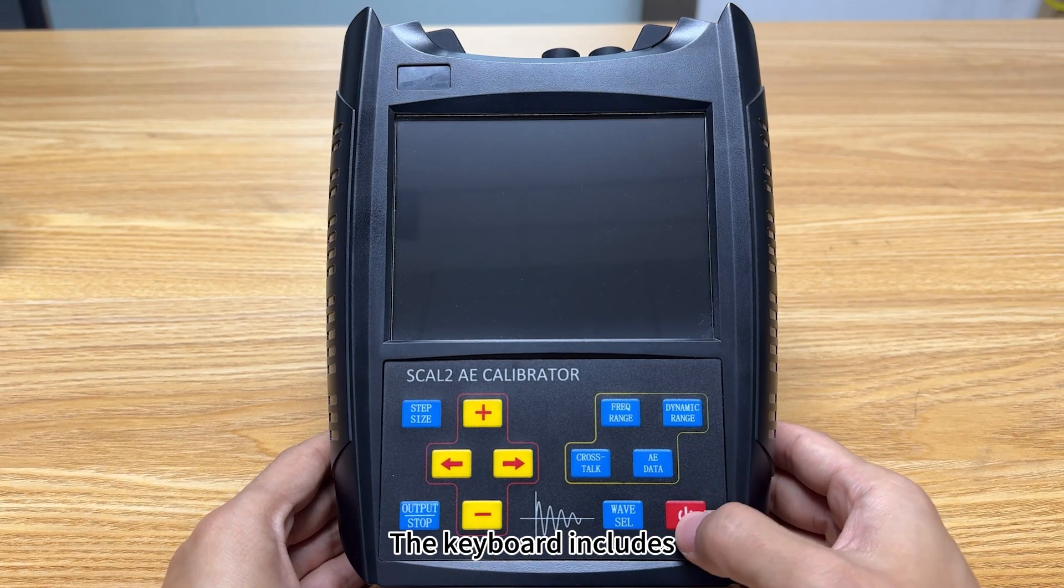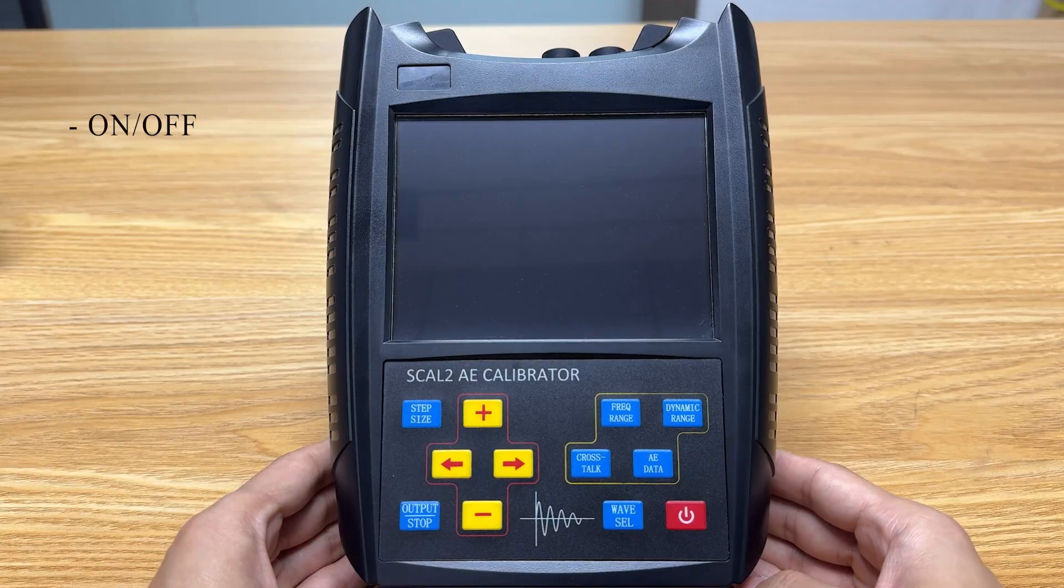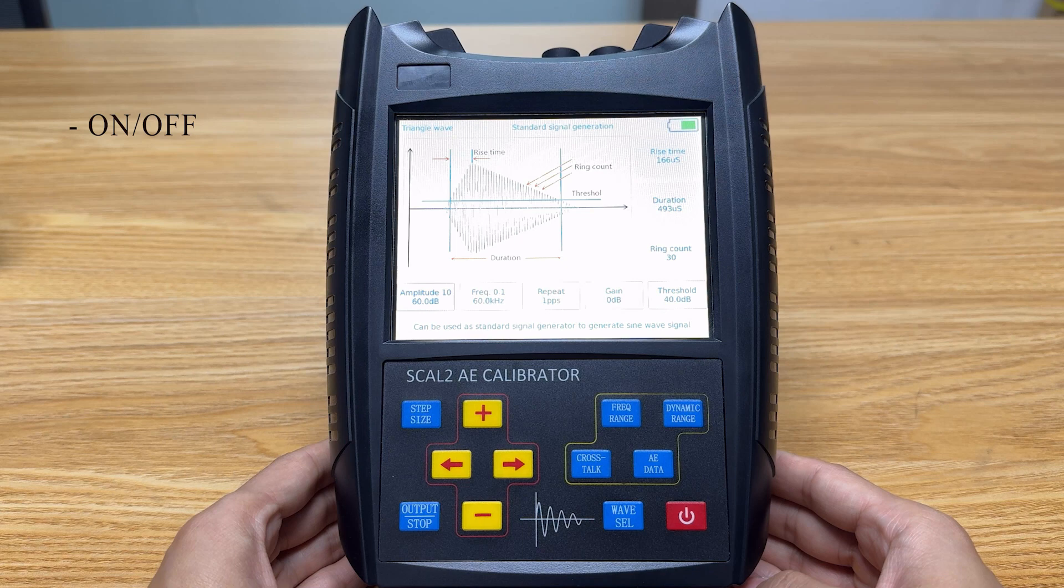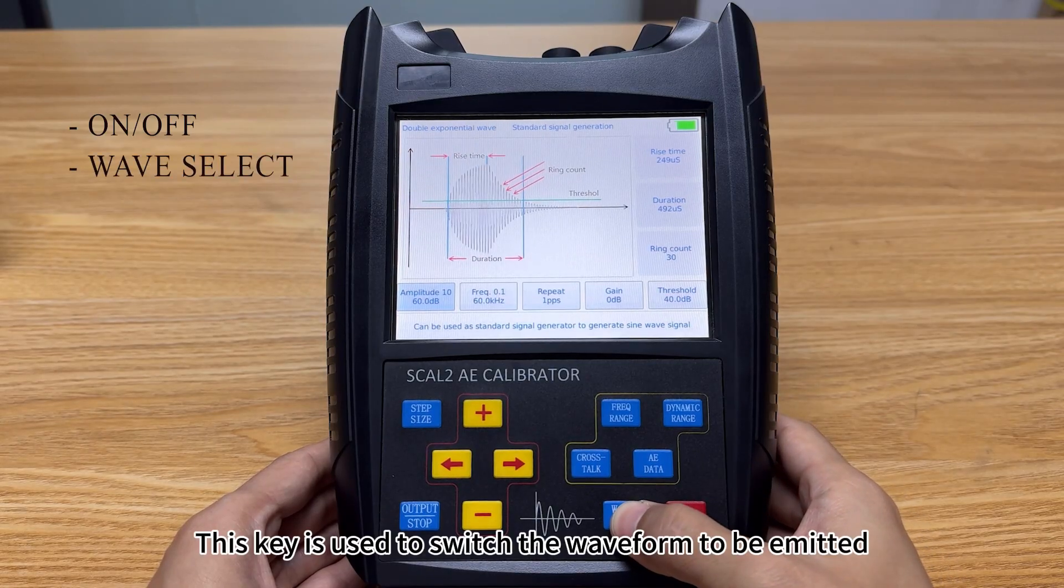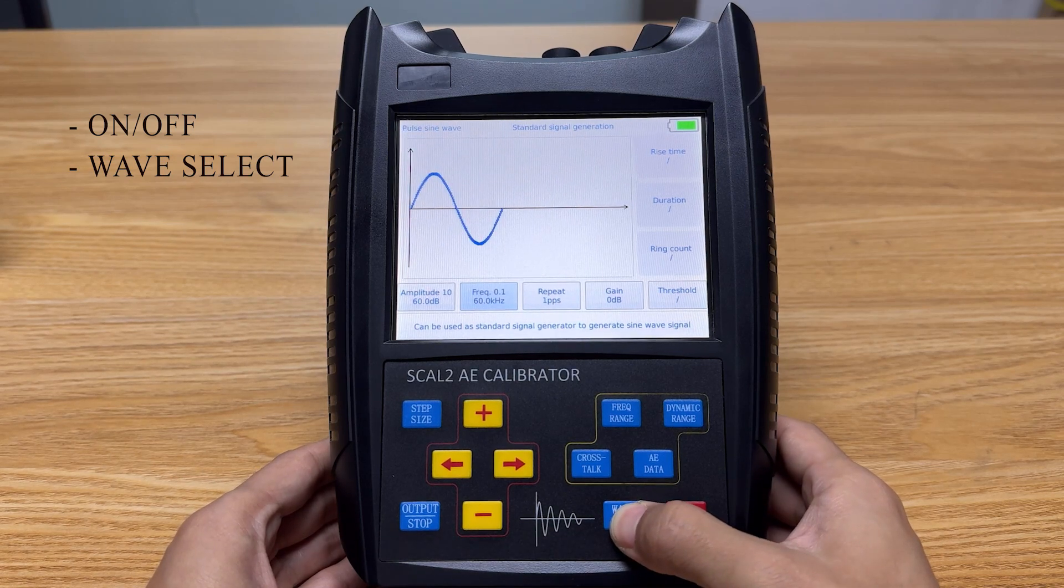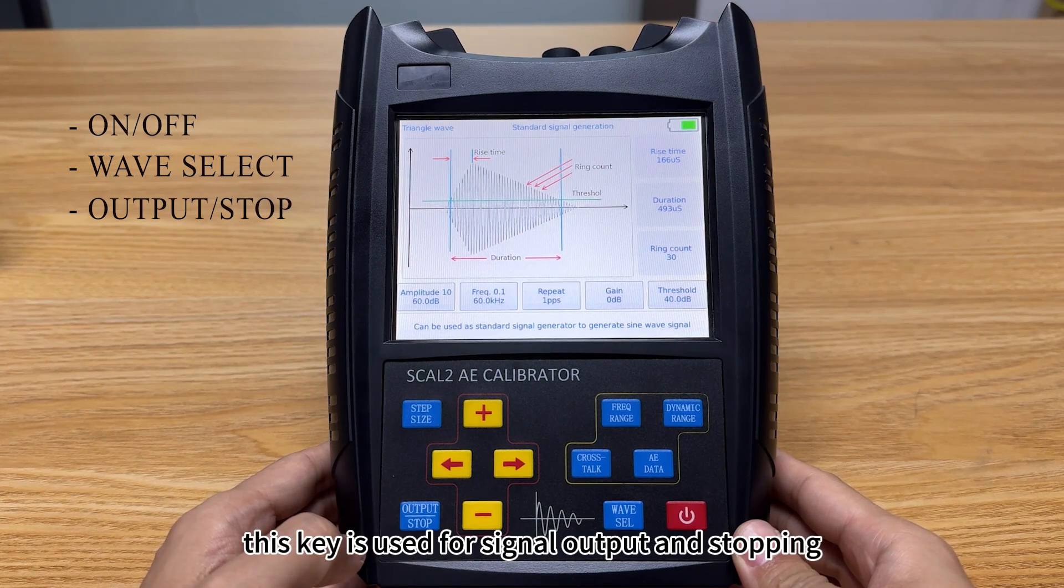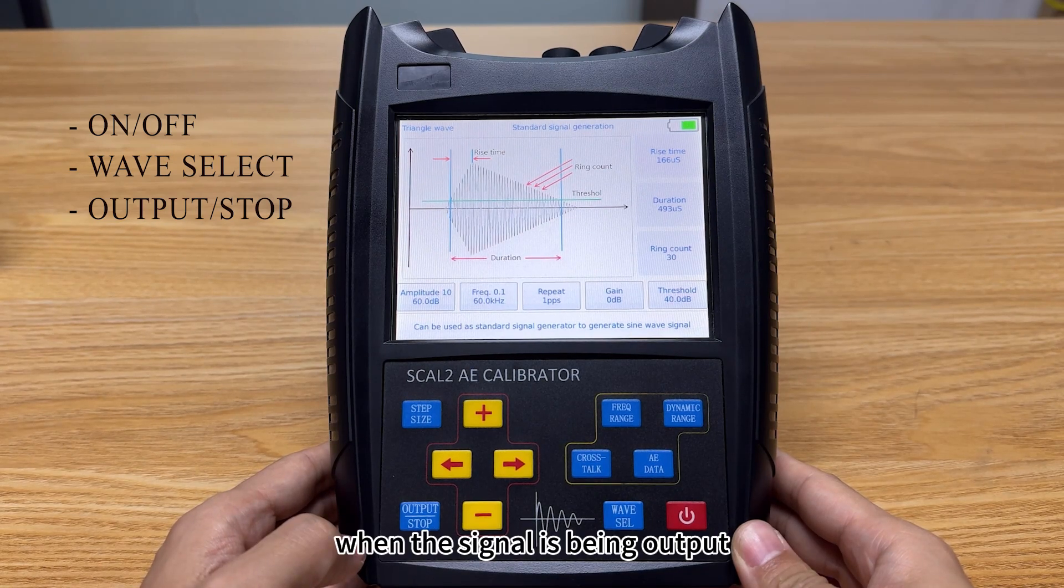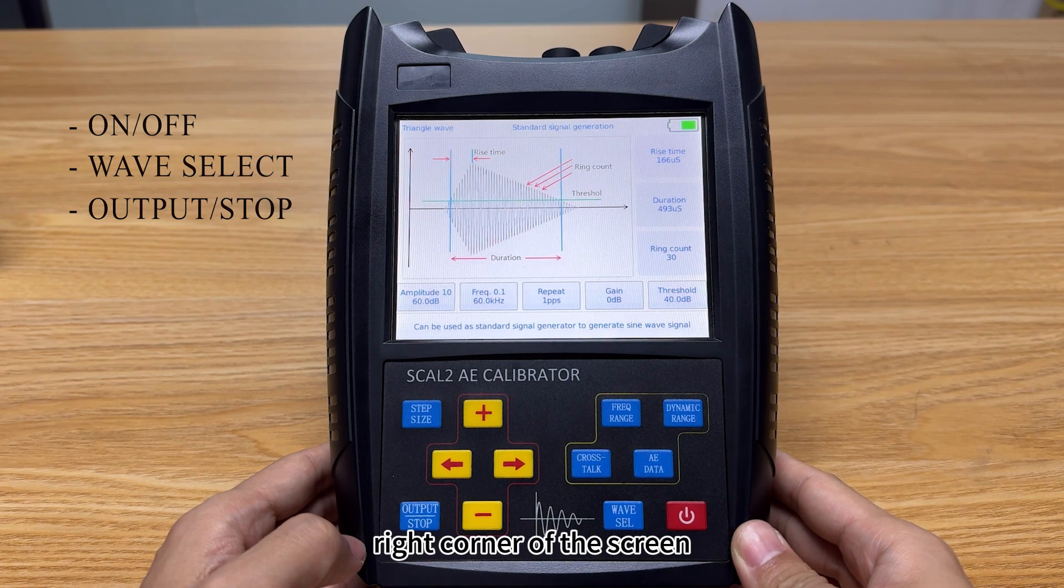The keyboard includes on or off, wave select which is used to switch the waveform to be emitted, and output or stop which is used for signal output and stopping. When the signal is being output, the emission icon will flash on the top right corner of the screen.